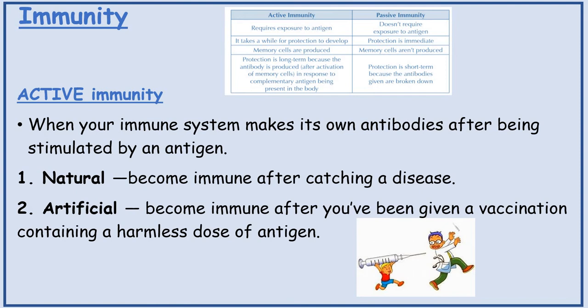Just a bit of a recap on immunity. You've got active immunity — this is when your immune system makes its own antibodies after being stimulated by an antigen. There is natural, which is where you become immune after catching a disease. Or artificial, which is where you become immune after you've been given a vaccination containing a harmless dose of an antigen.